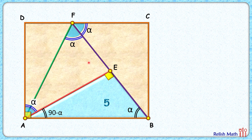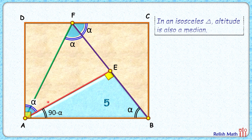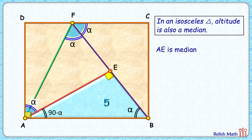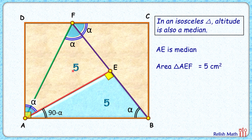Triangle ABF has two angles of alpha and alpha, making it an isosceles triangle. By theorem, the altitude of an isosceles triangle is also its median, so AE is the median of triangle FAB. Since the median divides a triangle into two equal areas, the area of triangle AEF equals the area of triangle ABE, which is 5 cm².